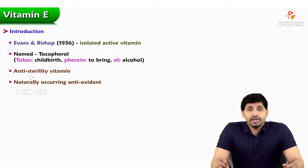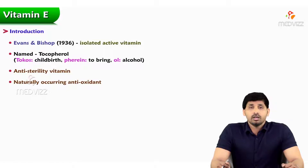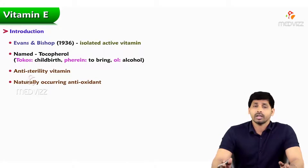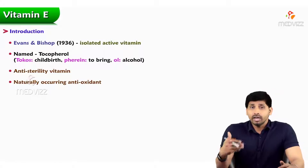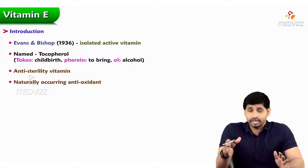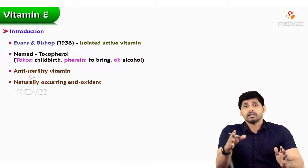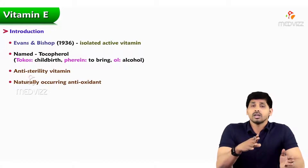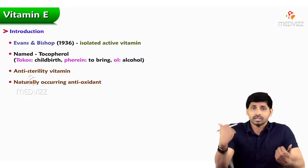Hello everyone. In this video we will be talking about another fat-soluble vitamin, that is Vitamin E. We are all aware: Vitamin A is for vision, Vitamin D is for bone metabolism, and Vitamin E is an antioxidant to keep you younger. More Vitamin E in your diet acts as an antioxidant because aging is nothing but oxidation of your cells — oxidants cause damage to your cells.